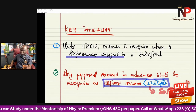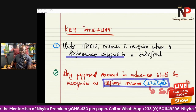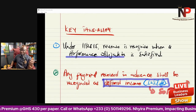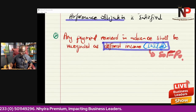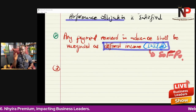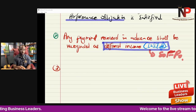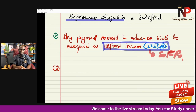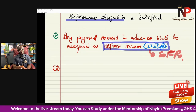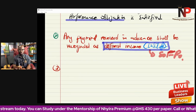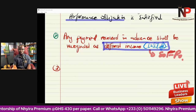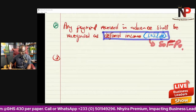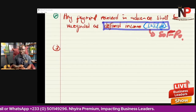Principle one: under IFRS 15, revenue is recognized when a performance obligation is satisfied. Principle two: any payments received in advance shall be recognized as deferred income. Principle three: sometimes revenue is due but has not yet been received, because of the nature of the contract.